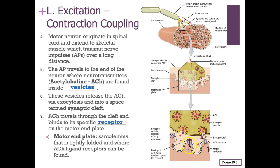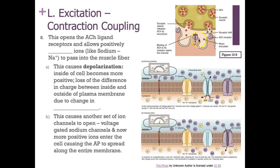The vesicles release acetylcholine through exocytosis. The acetylcholine moves through the synaptic cleft and binds to its specific receptor on the motor end plate. Acetylcholine does not move into the muscle cell; instead, it opens a channel to allow sodium to move into the muscle cell. The area of sarcolemma invagination is the motor end plate, where acetylcholine (ligand) receptors are found.